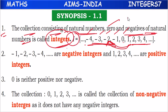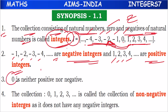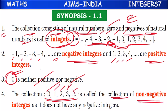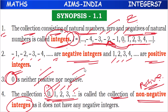Sometimes integers are denoted by I, sometimes by Z. Minus 1, minus 2, minus 3, minus 4 are called negative integers. 1, 2, 3, 4 are called positive integers. Here, 0 is neither positive nor negative. The collection starting from 0, 1, 2, 3, and so on is called the collection of non-negative integers. We cannot call them positive integers because 0 is neither positive nor negative — it is not having any negative integers, so we call them non-negative integers.